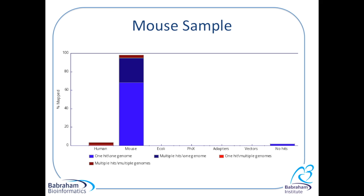However, a small number of reads mapped against the human genome. Does this mean there is contamination? Well, let's just look in a little bit more detail at the graph.